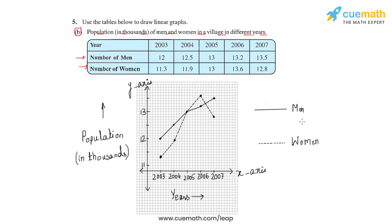Since we have two sets of data, the number of men is represented as the solid line and the number of women as the dotted line, and we plotted the line graph using these values. If we observe the x-axis, we use the same logic as before — five units represents one year.